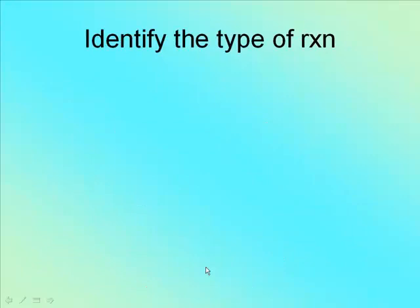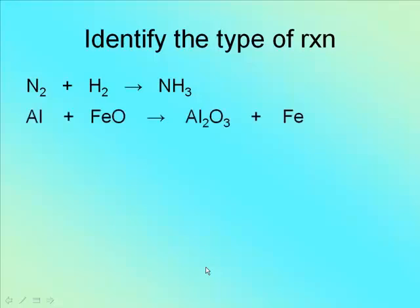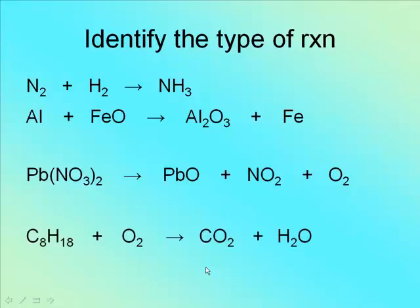So let's go through some examples. Here's what I want to do. I am going to show you all of them. I'll let you work out the solution. I want you to pause the video, and then I'm going to show you how to figure it out. So, I went too fast. You've got N2 plus H2 yields NH3. Al plus FeO yields Al2O3 plus Fe. PbN032 plus PbO. I'm sorry. PbN032 yields PbO plus NO2 plus O2. C8H18 plus O2 yields CO2 plus H2O. So, pause the video now.